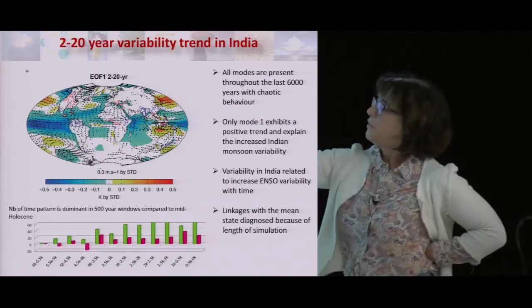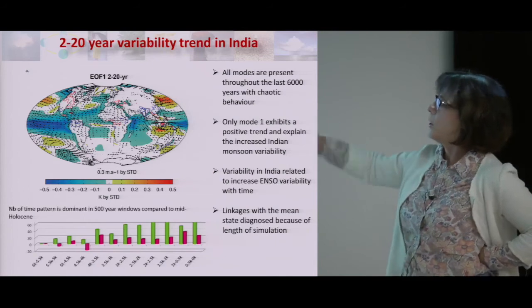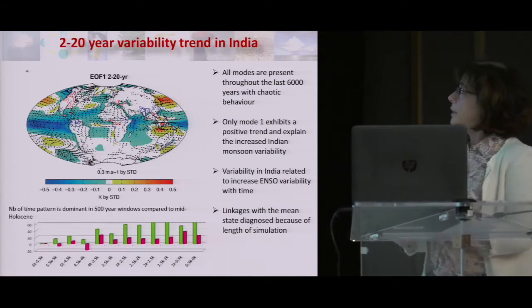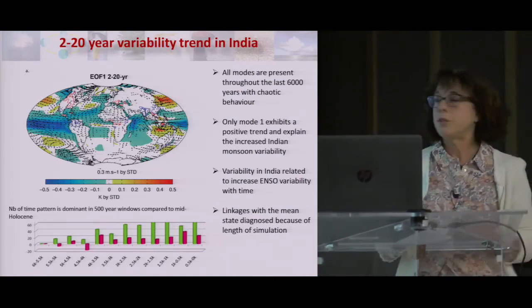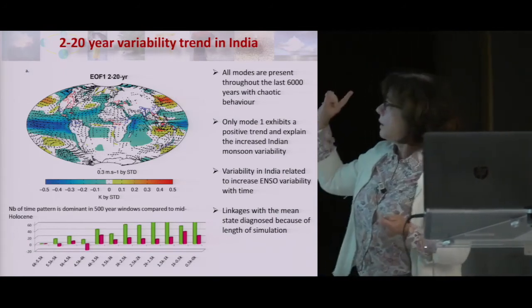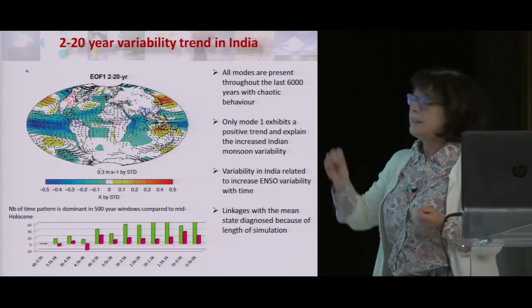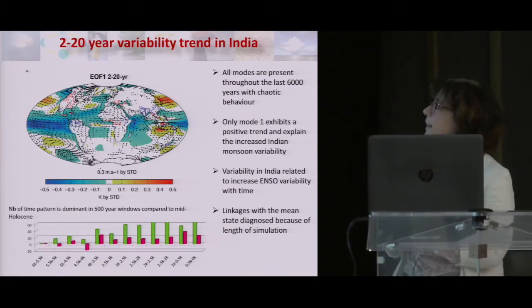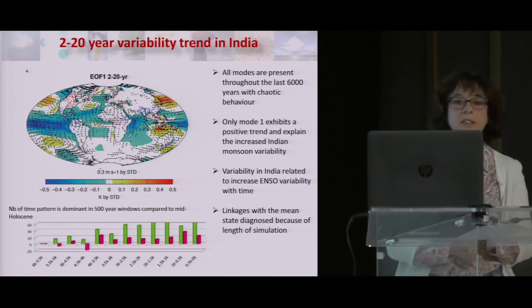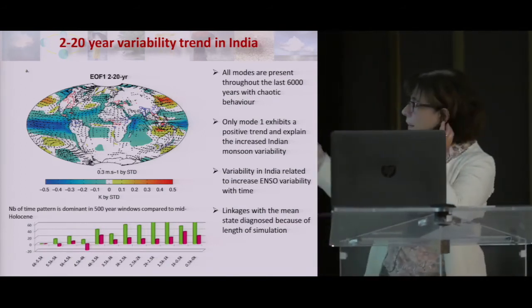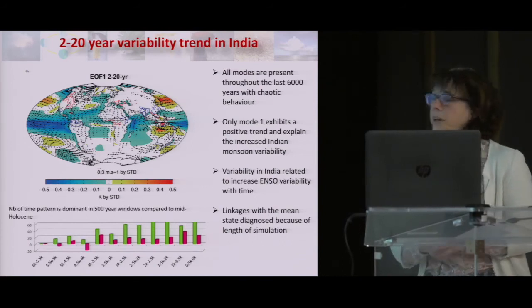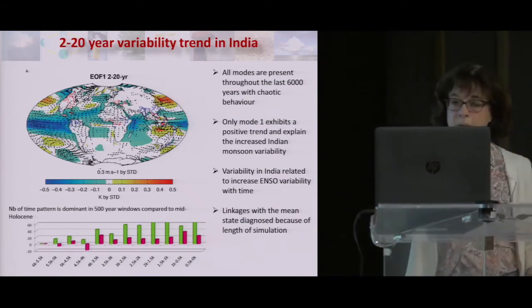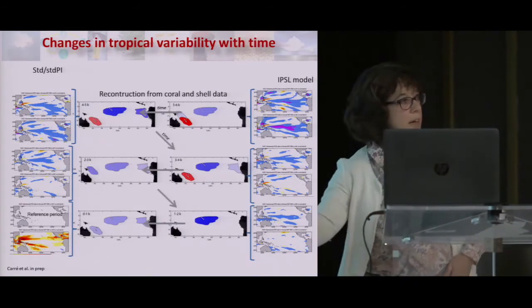Looking at the number of times this pattern is dominant by pieces of 500 years, we find only one mode drifting. The method allows us to do that, and it clearly shows that the increase in ENSO over the Holocene is really associated with the increase in monsoon variability. Even though we have periods of hundreds or more years with high or low ENSO variability, we can detect something because of the length of the simulation.